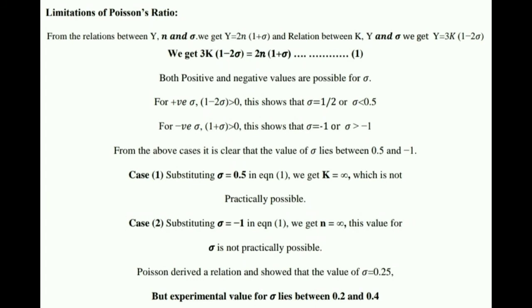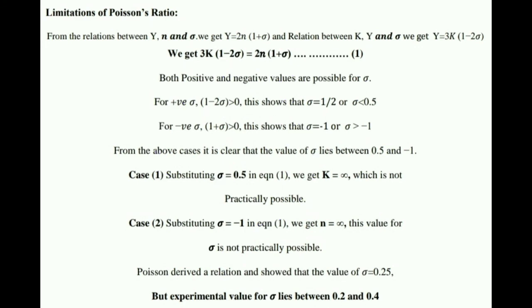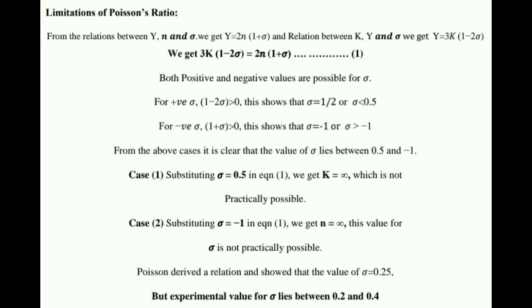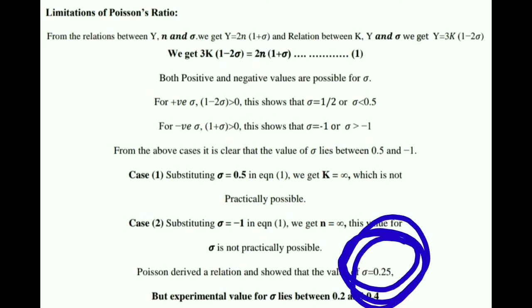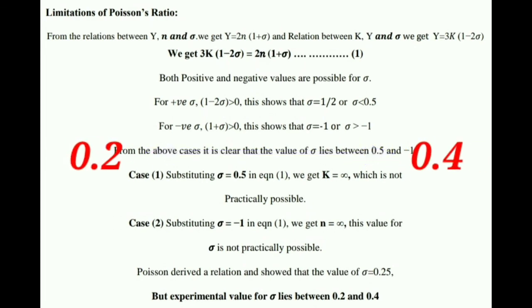If we substitute σ = 0.5 or σ = −1 into the equation, we get K = ∞ and N = ∞ in both cases — meaning bulk modulus and rigidity modulus equal infinity, which is practically not possible. Therefore, Poisson derived that σ must be around 0.25, and in practice σ lies between 0.2 and 0.4. This is the limitation of Poisson's ratio.